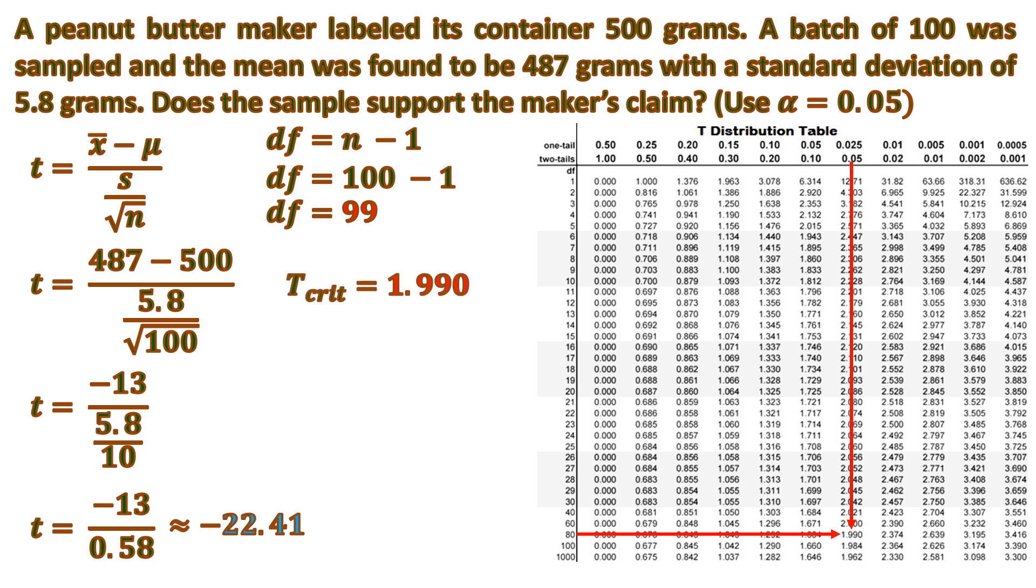We're going to compare it with the t-value. We're going to ignore the negative sign or positive sign by putting it inside the absolute value. We're going to compare 22.41 and 1.990. Obviously, the t-value is way bigger than the t-critical. If the t-value is bigger than the t-critical, then the result is significant. That means there is significant difference. That means 487 is different from 500. That means that 13 grams difference matters.